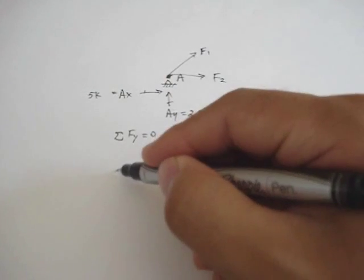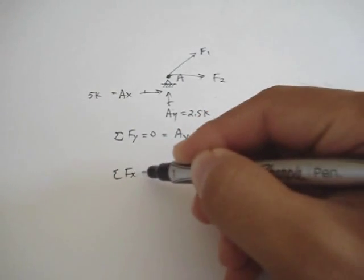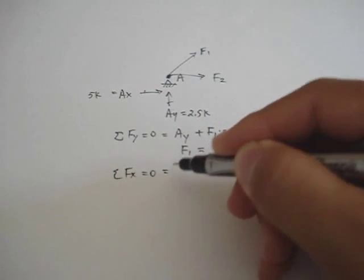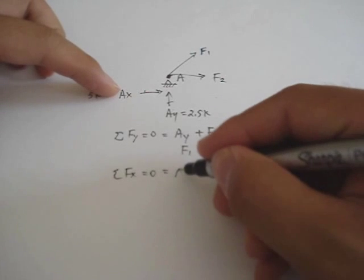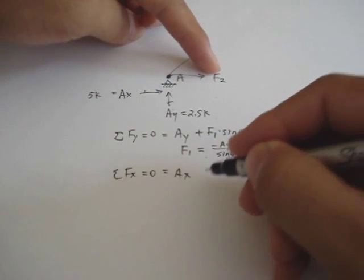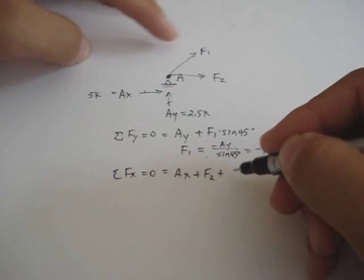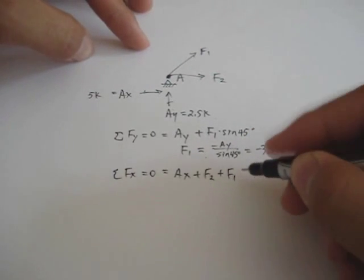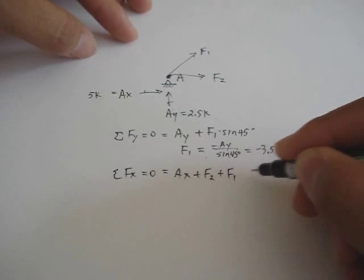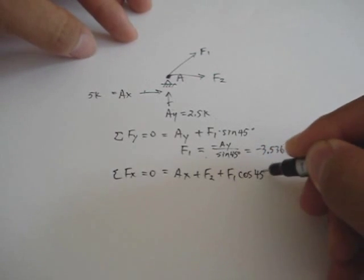All right. Now, sum of the forces in the x direction equals zero. And that's equal to plus Ax, plus F2, and then the plus x component of the F1 force. So that's F1 cosine of 45 degrees.